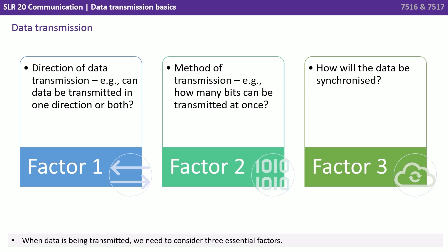When data is being transmitted we need to consider three essential factors. Firstly, the direction of data transmission — can data be transmitted in one direction or both? The method of transmission — how many bits can be transmitted at once? And finally, how will the data transmission itself be synchronised?